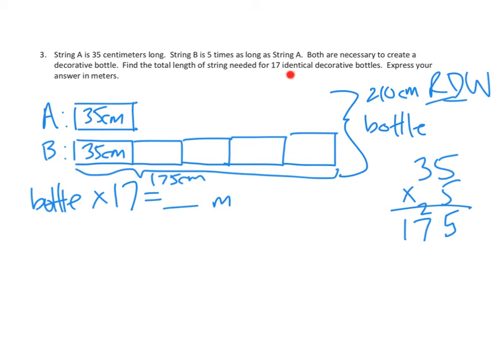So now we need to know the total length of string needed for 17 bottles. So now we have to take 210 times 17. That's 210 centimeters for one bottle times 17 bottles. Standard algorithm for multiplication. 7 times 0 in the 1s column is 0. 7 times 110 is 7 10s. And 7 times 200s is 14 100s. Let's move to our next partial product. 110 times 0 is 0 10s. 110 times 110 is 100. And finally, 110 times 200 is 2,000.